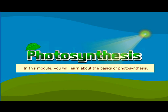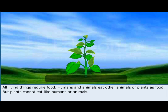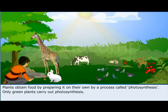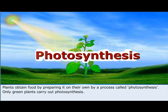In this module you will learn about the basics of photosynthesis. All living things require food. Humans and animals eat other animals or plants as food, but plants cannot eat like humans or animals. Plants obtain food by preparing it on their own by a process called photosynthesis. Only green plants carry out photosynthesis.